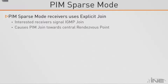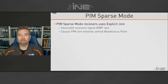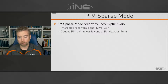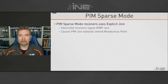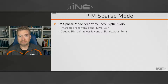In PIM sparse mode, interested receivers signal an IGMP join via an IGMP report message. In the IGMP report, the receiver says it wants traffic for any sender sending to a particular group — what we call a star comma G (*, G) entry. The issue is that when the first-hop router attached to the receiver gets that message, it knows there's a receiver for group G, but if there's no entry for the sender, it doesn't know where to receive the traffic from.